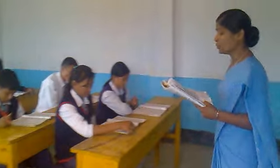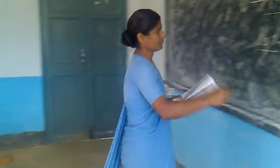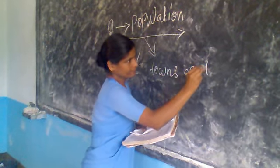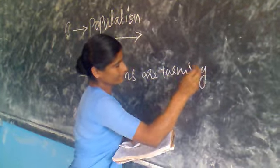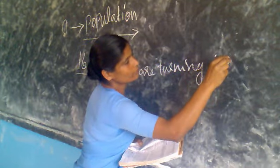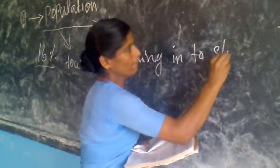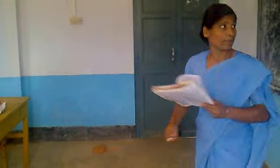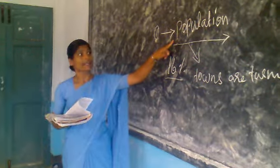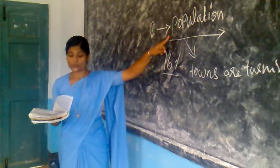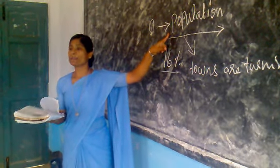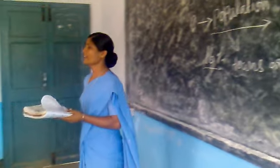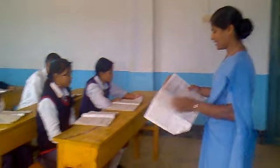When population increases, towns are turning into slums. Apart from this, population increase also leads to environmental damage, causing damage to the environment.